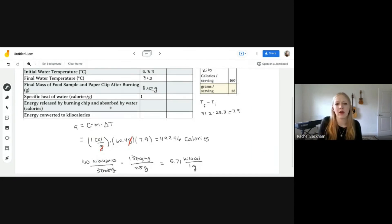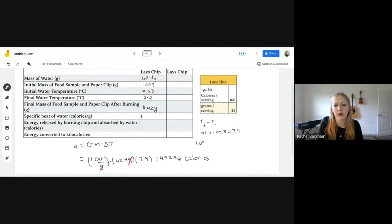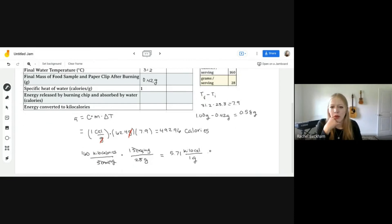Well, how many grams did we use? Because we started with 1.00 grams, and we ended with 0.42 grams of unused chip. So 1.00 minus 0.42, we used 0.58 grams. Okay, so we're going to multiply this by 0.58 to accurately compare here. So 5.71 times 0.58 is 3.31. I'll stop there. Kilocalories.